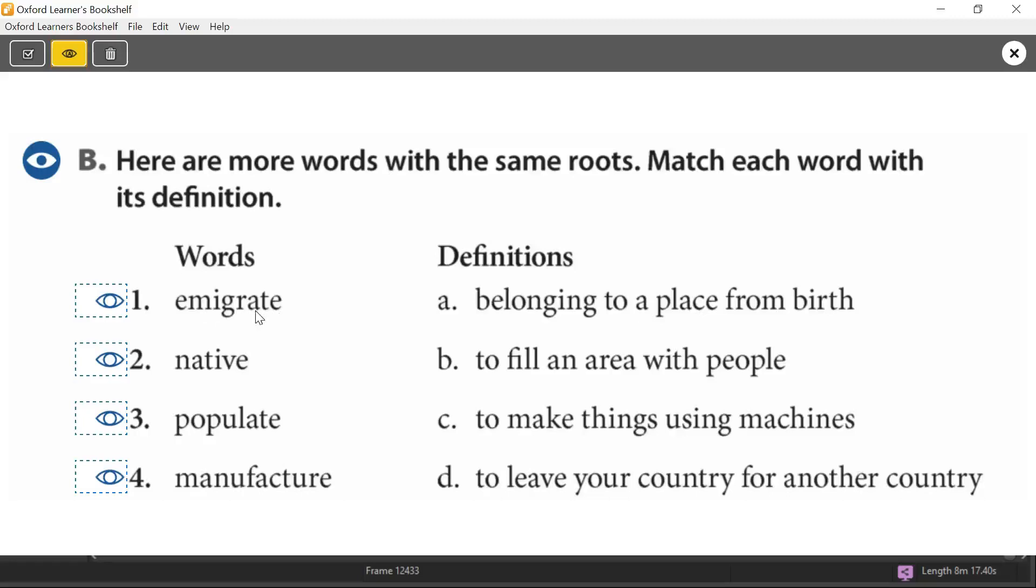Number one. Emigrate. What's the root word here? Is it emi? No. Is it ate? No. The root word is M-I-G-R-A. Migra. And if you remember, it means to move. So let's look at a definition here that is related to moving and leaving somewhere to go to somewhere else. Emigrate. To leave your country for another country. Excellent. So that's D. Because you leave, you move. So we know that the meaning of emigrate is to leave your country, to move away from your country for another country.